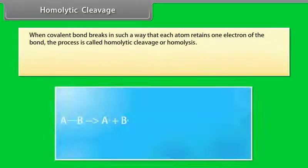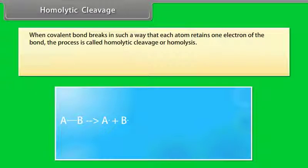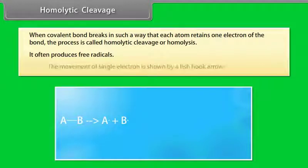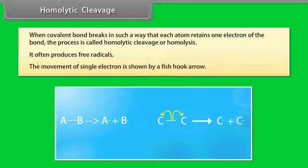Homolytic cleavage — when a covalent bond breaks in such a way that each atom retains one electron of the bond, the process is called homolytic cleavage or homolysis. It often produces free radicals. The movement of a single electron is shown by a fishhook arrow.